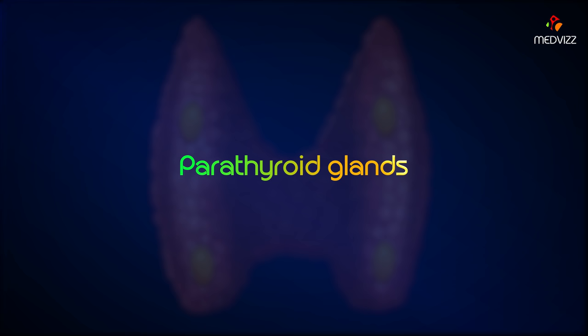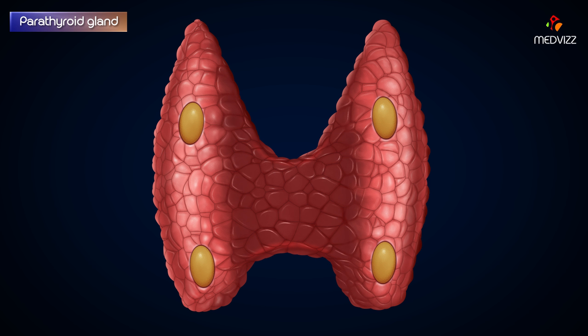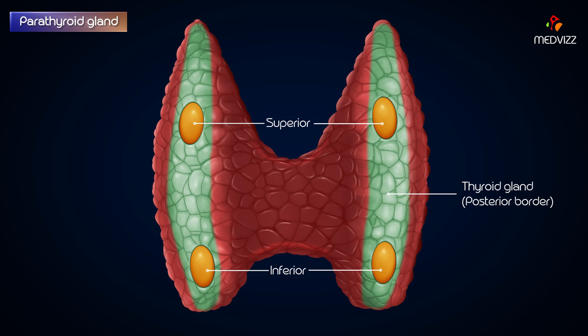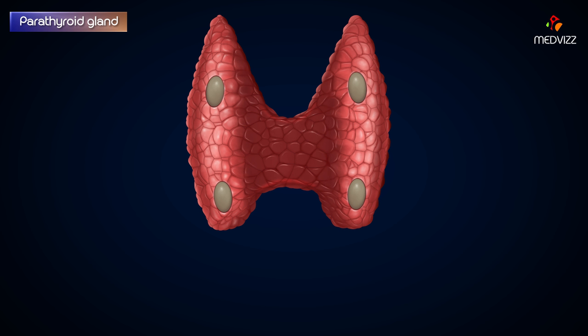In this topic we will be discussing the location, size and shape, blood supply, nerve supply, microscopic structure, functions, clinical correlation, and development of the parathyroid glands. The parathyroid glands are two pairs — superior and inferior — of small endocrine glands located along the posterior border of the thyroid lobes within the thyroid capsule. They appear as small yellowish brown bodies.